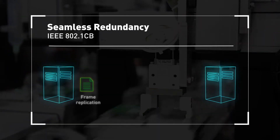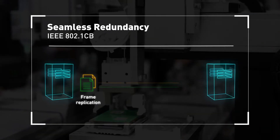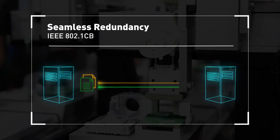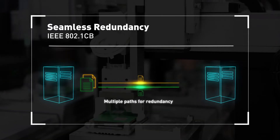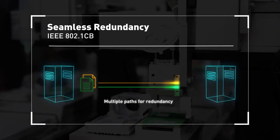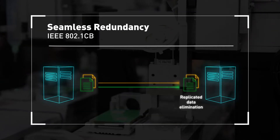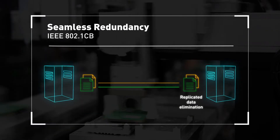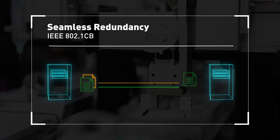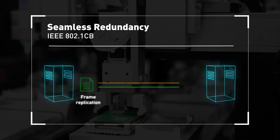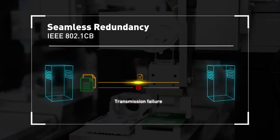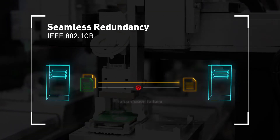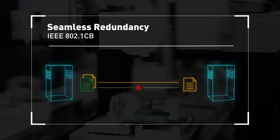Four: seamless redundancy. Frame replication and elimination for reliability sends duplicate copies of each frame over multiple paths. When the primary path functions well, the duplicated copy on the secondary path is eliminated. When the primary path fails, the duplicated copy arrives at the destination, guaranteeing no packet losses.